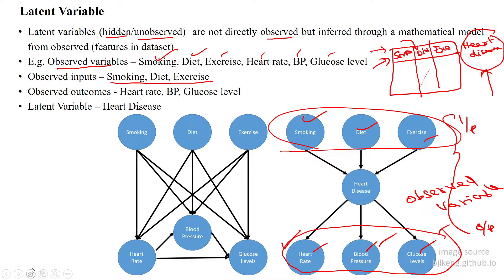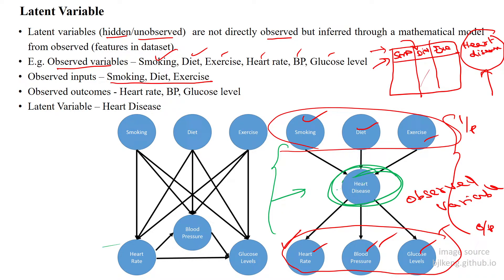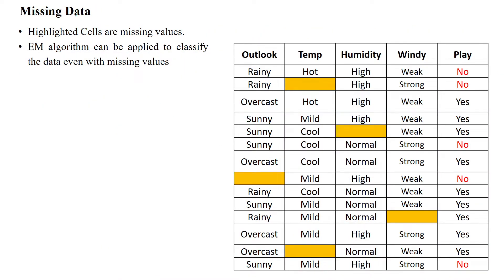From these observed variables, we can identify whether a person is affected by heart disease or not. However, heart disease is unobserved — we cannot directly calculate or directly tell if a person is affected. There are no units for heart disease. So heart disease is observed indirectly from the given observed variables, and therefore it is called a latent variable.